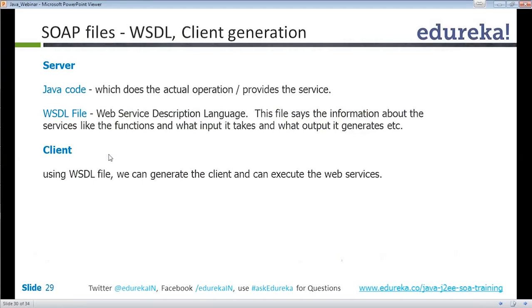Some of the files generated in SOAP: whatever service we write will be written in Java. We also have a WSDL file — WSDL stands for Web Services Description Language. That file describes what services are provided in the Java code, what input is required, and what output is expected. Using the WSDL file, the client can generate or write web services and connect to the server.